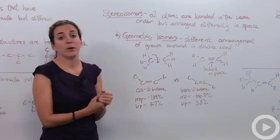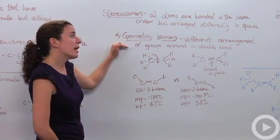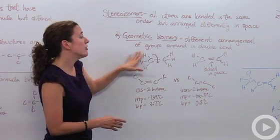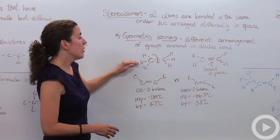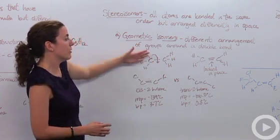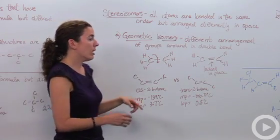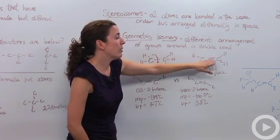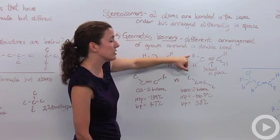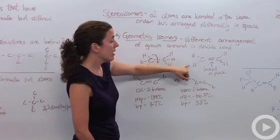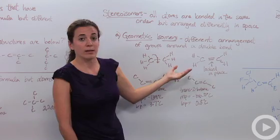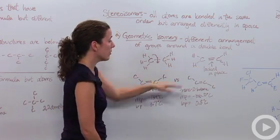There are two main stereoisomers I want you to know. The first is geometric isomers — a different arrangement of groups around a double bond. If you're talking about single-bonded carbons, they can actually rotate around that single bond freely with no issue at all. But if it's double bonded, that double bond locks it into place, so you can't turn and twist that carbon. The hydrogen that's up will always be up, and the hydrogen that's down will always be down. The same applies to triple bonds — they are also locked into place.